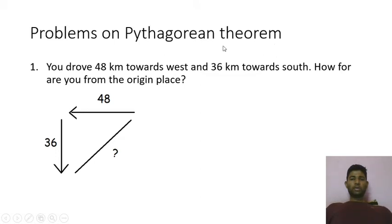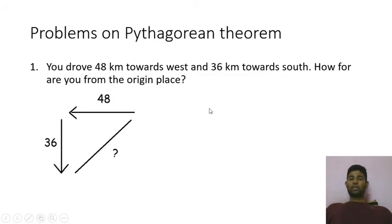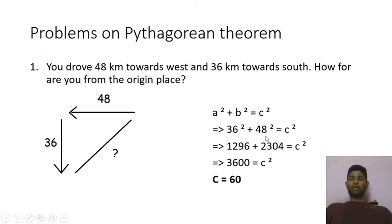Now let's do some problems. You drove 48 kilometers towards west and 36 kilometers towards south — how far are you from the original place? When you go west and then turn south, you are making a right angle at your turning point, so you can consider this journey as a right angle triangle and apply the Pythagorean theorem. Applying the values, we get C equals 60, meaning the distance between the starting point and your final position is 60 kilometers.